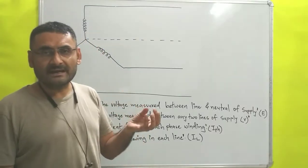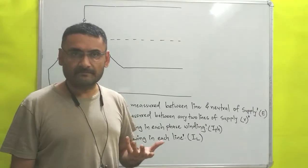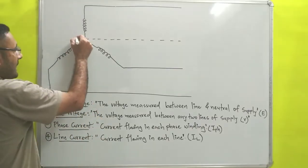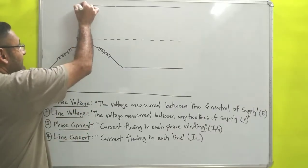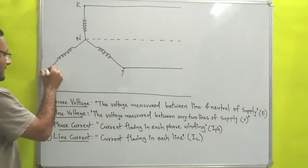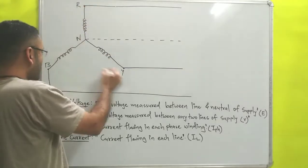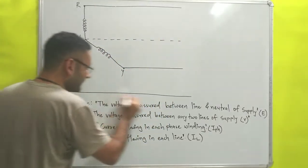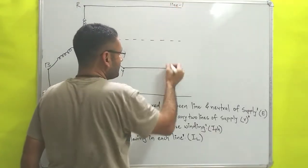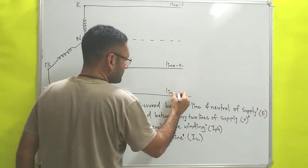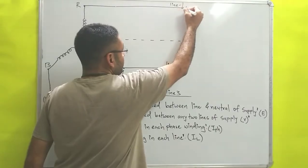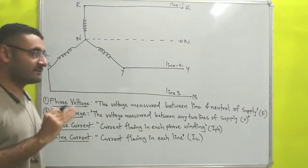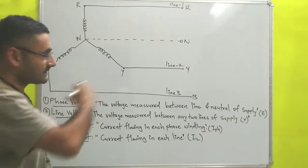In this video we are going to understand the definitions based on three-phase AC circuits. On the board I have drawn a three-phase star connection. The central point is known as the neutral point. The phases are known as R-phase, Y-phase, and B-phase. R, Y, and B are all connected with line conductors — line 1, line 2, and line 3. This is basically a three-phase generator producing current and supplying it to the load system.